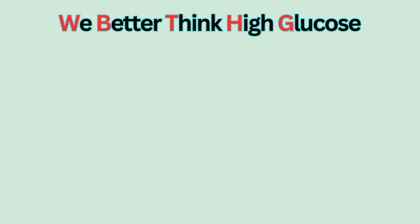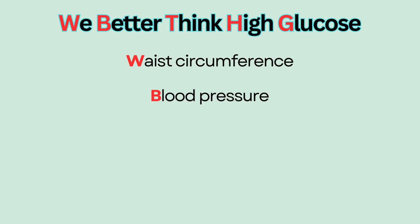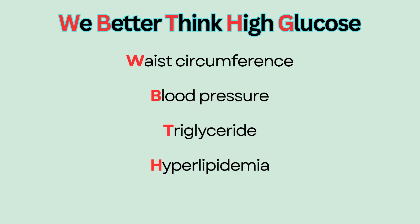These risk factors can be memorized as the mnemonic: 'We Better Think High Glucose.' W stands for waist circumference, B stands for blood pressure, T for triglyceride, H for HDL, and G for glucose. Here are the criteria for the risk factors.